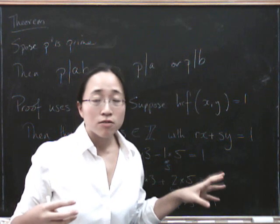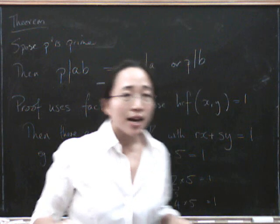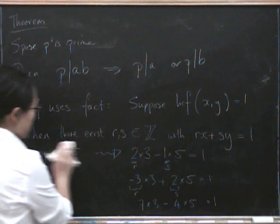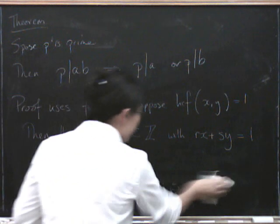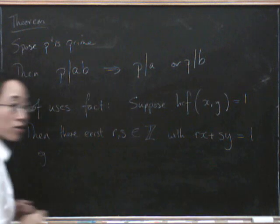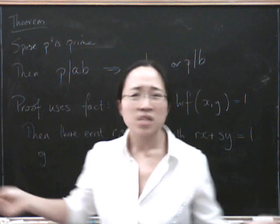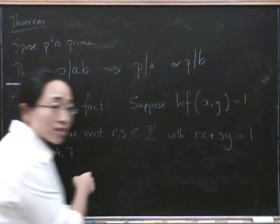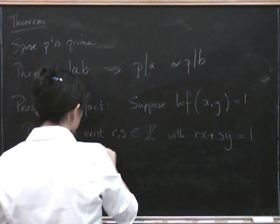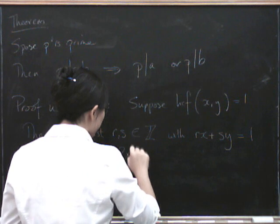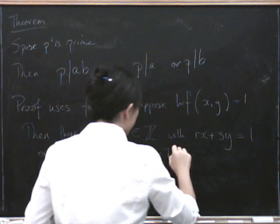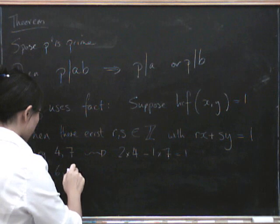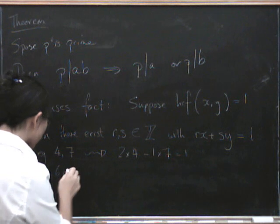And it doesn't matter. There are loads and loads of ways. But the point is there is at least one way. And we could try this again. We could try this also with, let's do another example. Let's try it with 7 and 4. So these numbers don't have to be prime. It's just that their highest common factor has to be 1. Well, that was kind of easy. You could do 2 times 4 minus 1 times 7 is 1. Let's do another one.